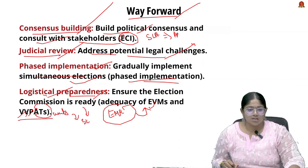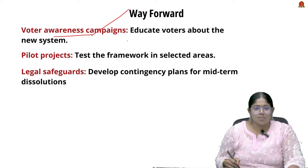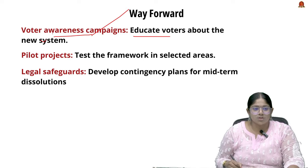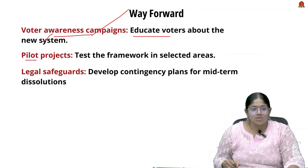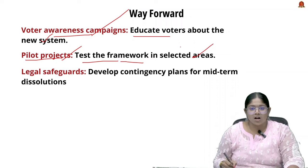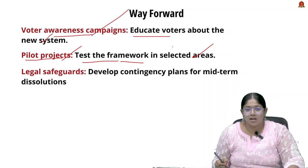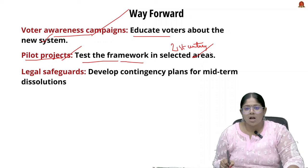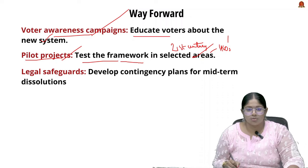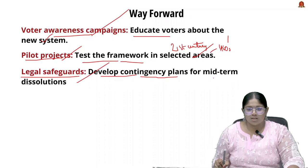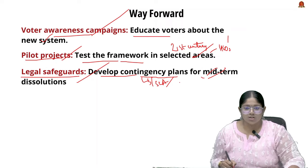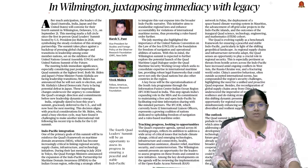Voter awareness campaigns are needed to educate voters about the new system, especially during phased implementation. A pilot project approach is necessary since India is a diverse country — testing frameworks in selected areas before full rollout is advisable, especially given that this practice was last conducted in the 1960s and a much different population exists today. Finally, developing legal safeguards and contingency plans for midterm dissolutions of both Lok Sabha and state legislative assemblies is essential to maintain the election cycle.